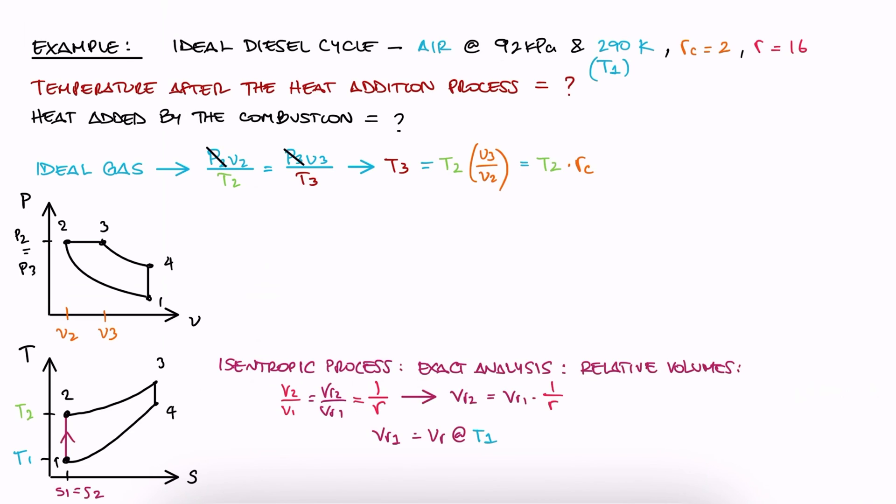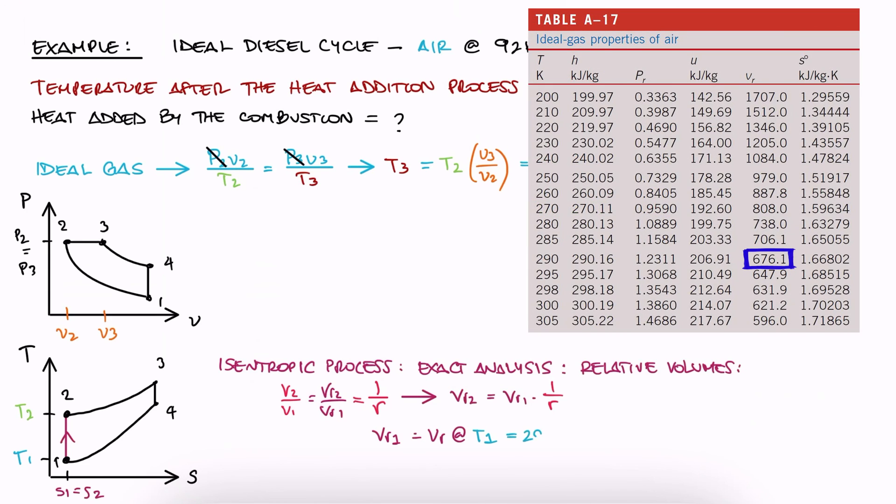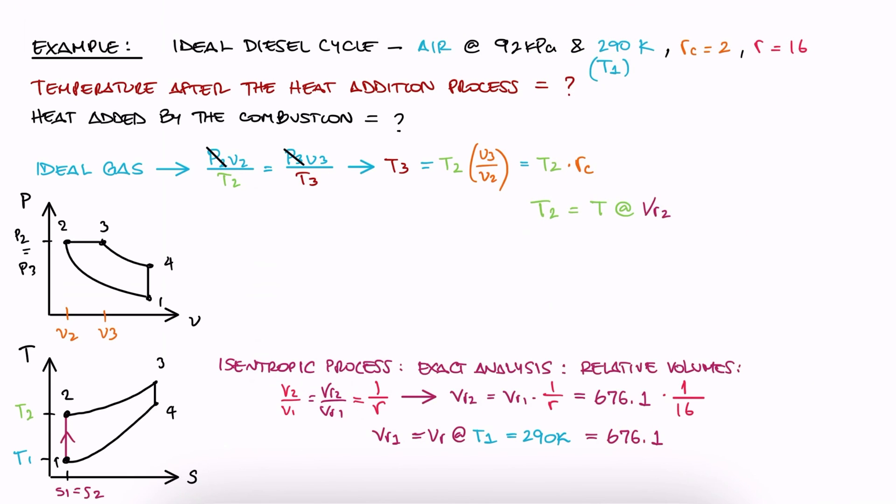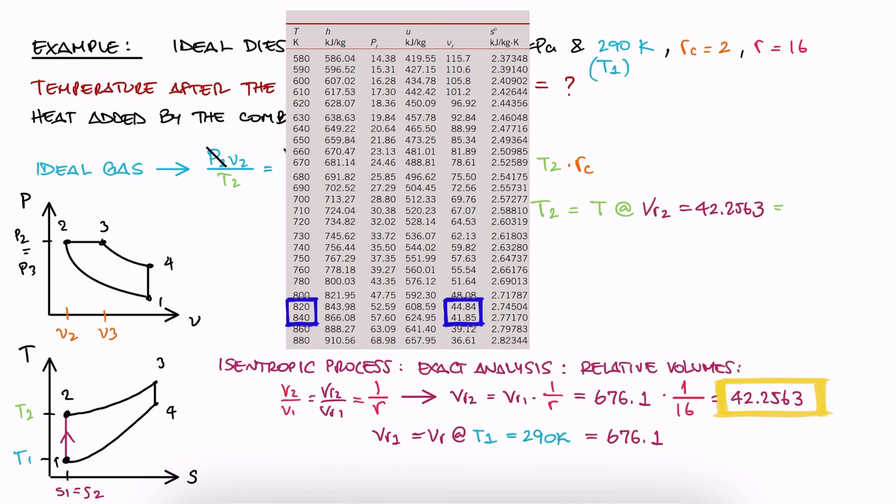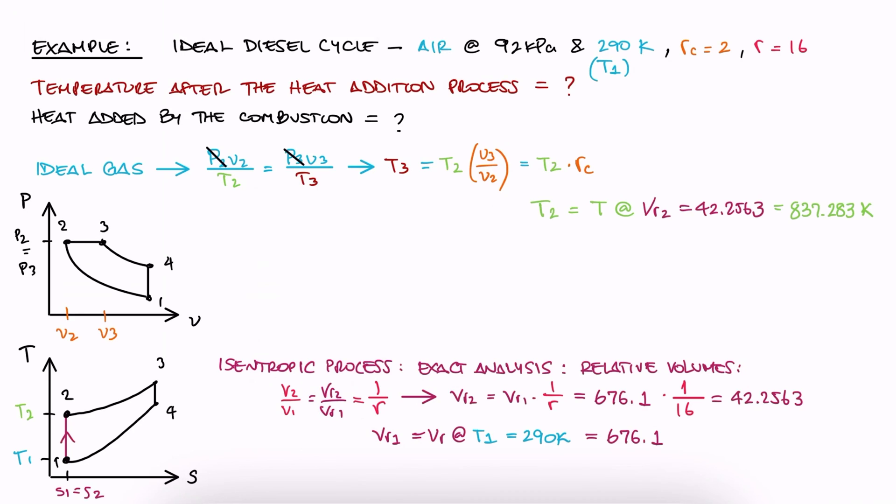That way, T2 is just the temperature that corresponds to Vr2. So let's do that. We look up Vr1 for 290 Kelvin. We use the compression ratio to calculate Vr2 and with this value, we interpolate to find the temperature that corresponds to Vr2. We substitute the T2 temperature and find that T3, the temperature at the heat addition process, is 1675 Kelvin.